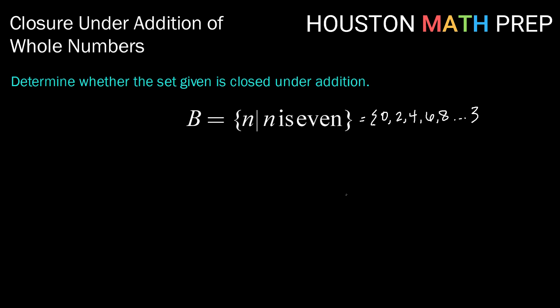So the question is, if I take any two even numbers, is the result even? Well, let's think about it. If a number is even, then it is divisible by 2, right? So let's say I take 2N, that's just any even number.